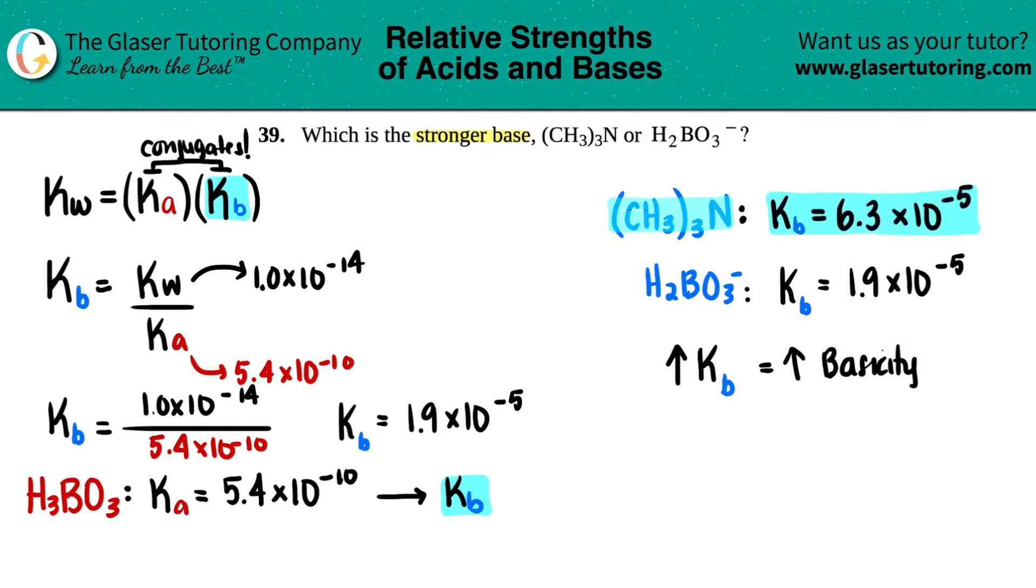(CH3)3N is the stronger base. Some of you immediately will say, well, this is negative so that's probably going to be really basic, but always do the work, just double check.